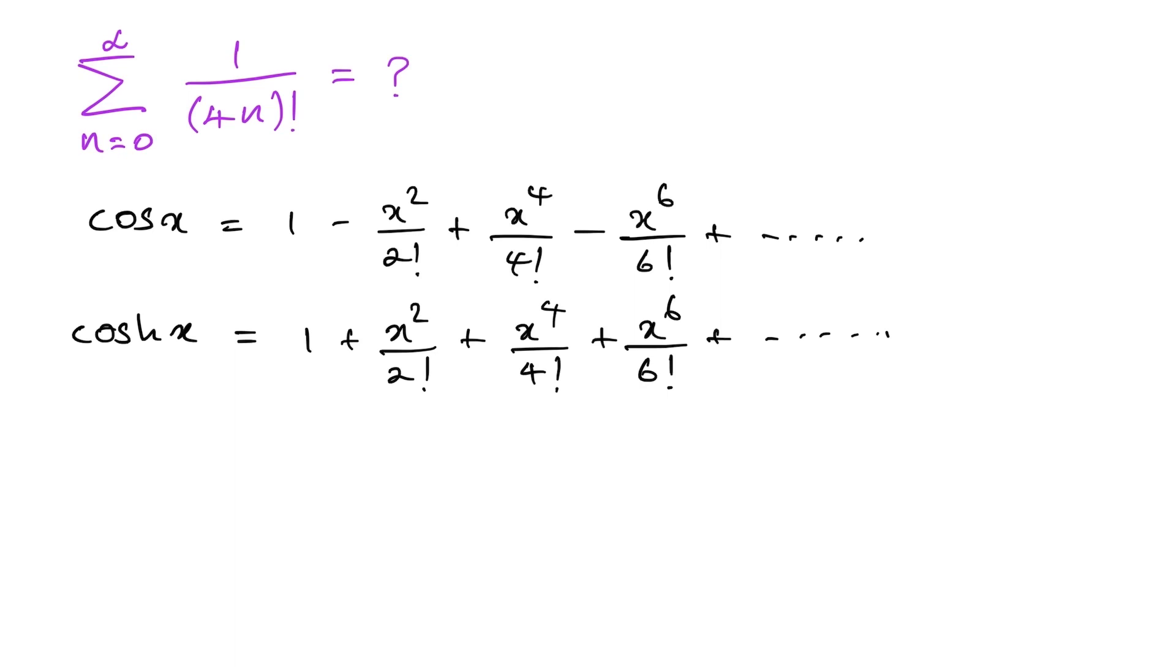Then let's take the sum of these two equations. So we have cosine of x plus hyperbolic cosine of x is equal to, now we know this part gets cancelled.